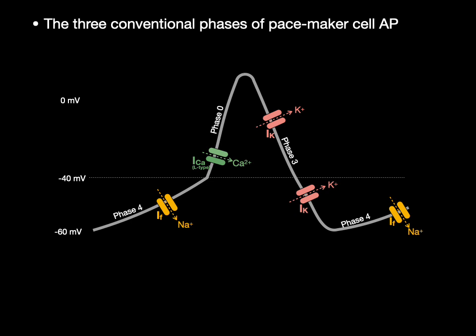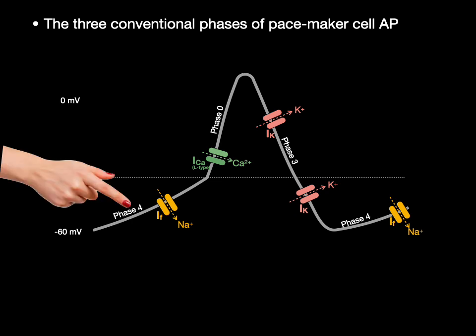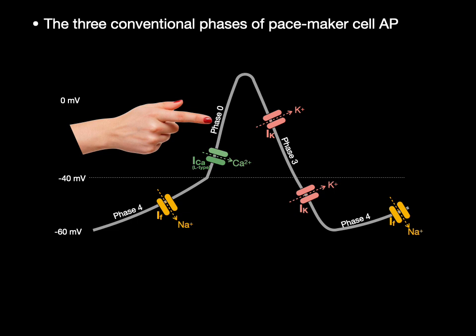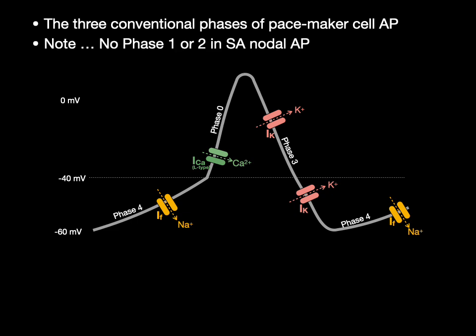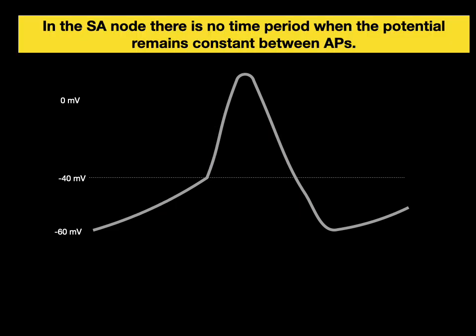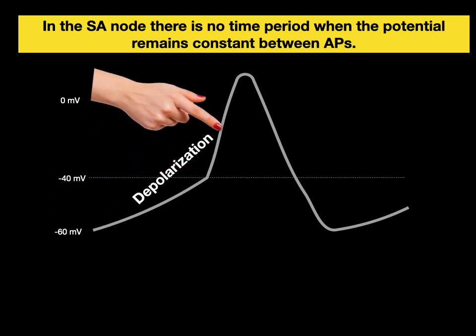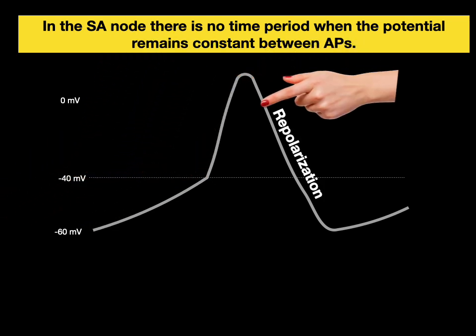The three conventional phases of pacemaker cell action potential are: phase four (the funny sodium current), phase zero (the depolarizing event through L-type calcium channels), and phase three (the repolarizing event), then back to phase four. There's really no phase one or phase two in SA nodal action potentials, though there are in contractile heart muscle cell action potentials — more on that in another video. In the SA node, there's no time period when the potential remains constant between action potentials — it's always either in a depolarization or a repolarization event, never constant.